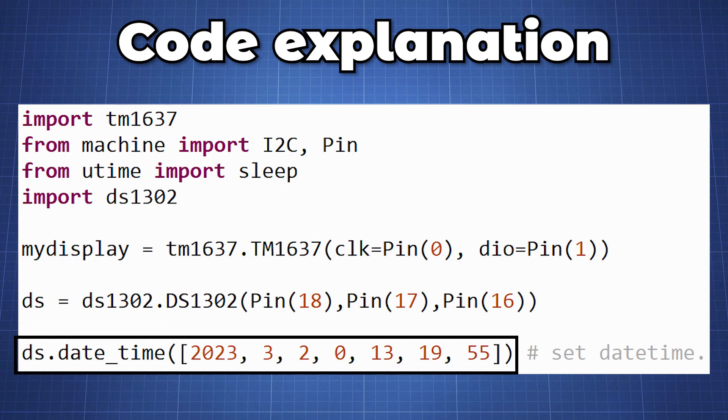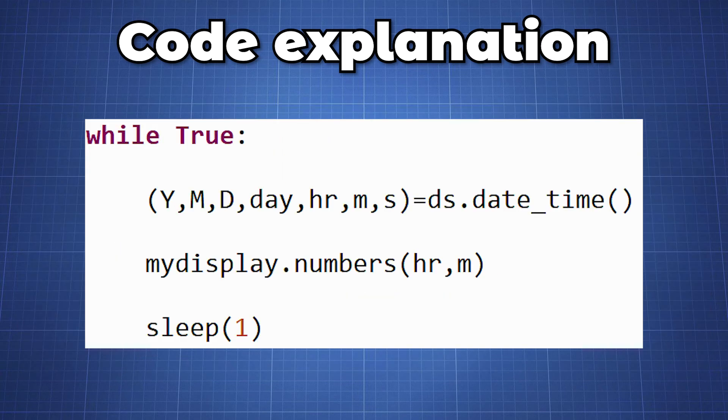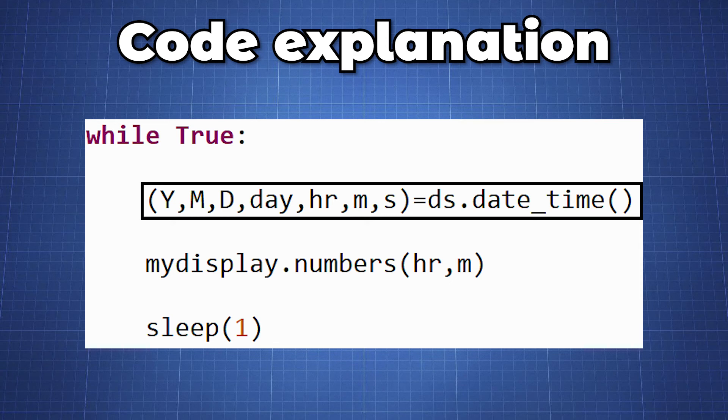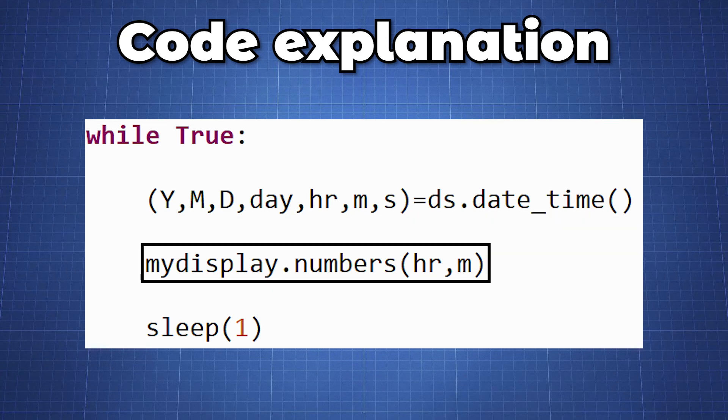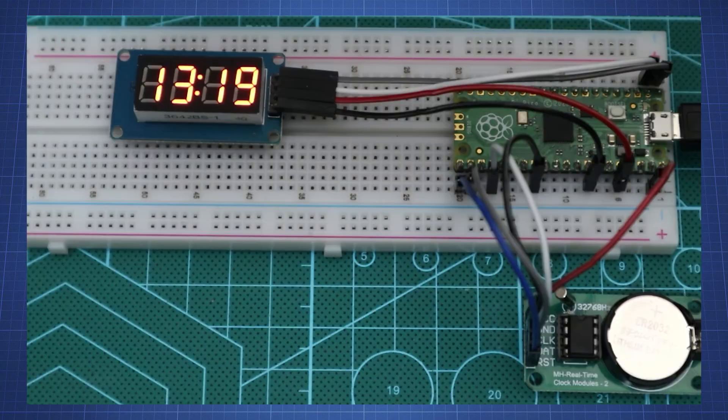After uploading this code remember to comment out the line and re-upload the code so that when you turn off the Pico and turn it back on the time will carry on from when you have set it. Now we create an endless loop where we will create variables to set it equal to date time. And using the numbers method we can display our hours and minutes. And that is a straightforward example how you can make a bare minimum clock.